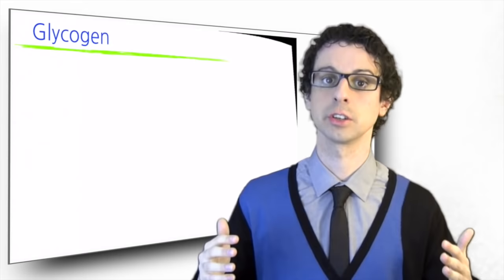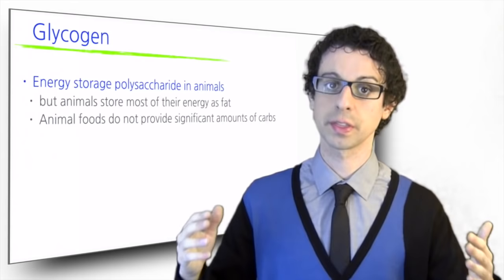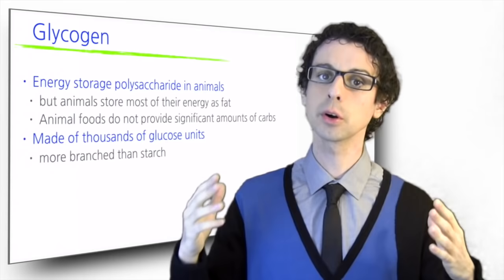Another important polysaccharide is glycogen, which is the main energy storage carbohydrate in animals, and is also made of thousands of molecules of glucose, but arranged in a different structure, with shorter but more frequent branches.